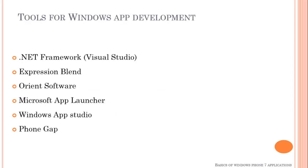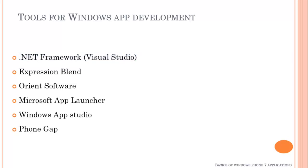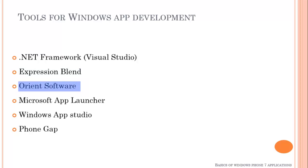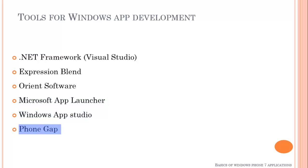There are various tools available for Windows application development, but here we are going to discuss about the .NET Framework tool for Windows mobile application. The first tool is .NET Framework, where we basically use Visual Studio along with various programming languages — that can be C++, C Sharp, or VB. The second is Expression Blend, which is provided by Visual Studio itself. Third is Orient Software, Microsoft App Launcher, Windows App Studio, and PhoneGap. You can use any of these for your Windows phone application development.